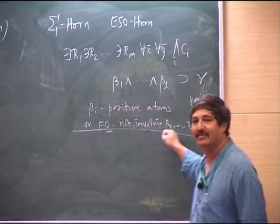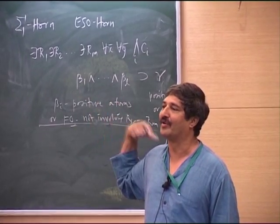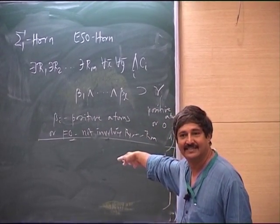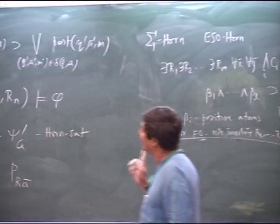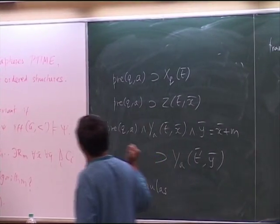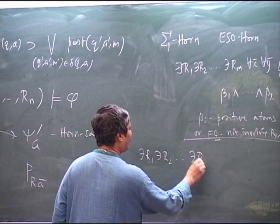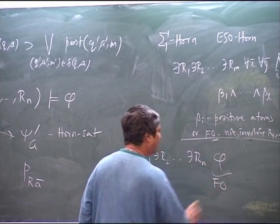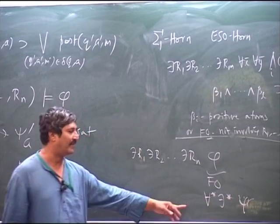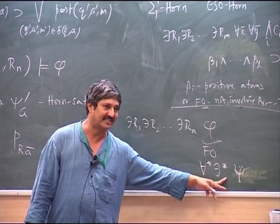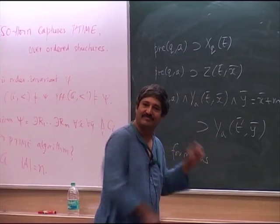Actually this is something you can eliminate, but if you eliminate it, you have to bring in the successor relation, the plus-one relation, into the atomic vocabulary. You can bring it in and then eliminate it — that is another step. Also worth noting: in Fagin's theorem, the formula can be brought into the form where the prefix is a string of universal quantifiers followed by a string of existential quantifiers.